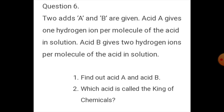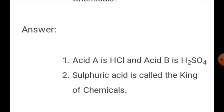Question six: Two acids A and B are given. Acid A gives one hydrogen ion per molecule of the acid in solution. Acid B gives two hydrogen ions per molecule of the acid in solution. Find out acid A and acid B, and which acid is called king of chemicals. Acid A is hydrochloric acid (HCl), which has only one hydrogen ion. Acid B is sulfuric acid (H2SO4), which has two hydrogen ions. Sulfuric acid is called king of chemicals.